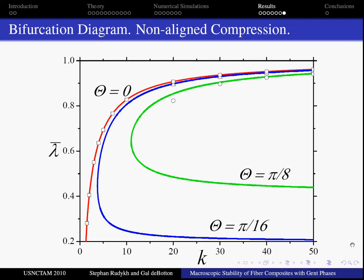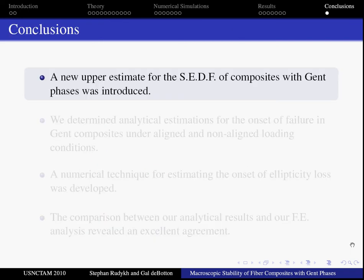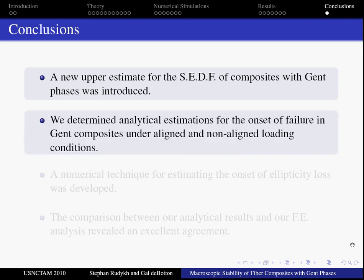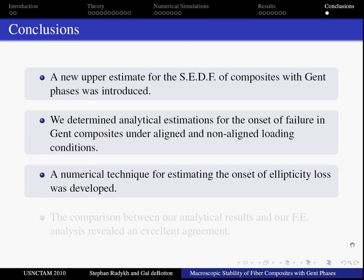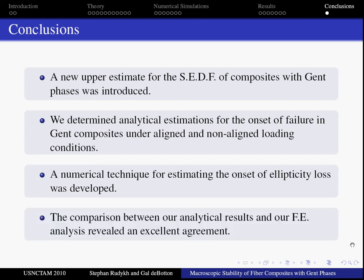To summarize, a new upper estimate for macroscopic strain energy density function with Gent phases was introduced. We determined the onset of failure due to the loss of stability of the fiber composites under aligned and non-aligned loading conditions. We developed the numerical technique to determine the onset of failure. The comparison between our analytical results with the results of our finite element simulations showed a fine agreement.